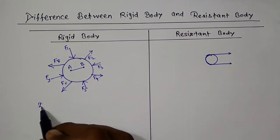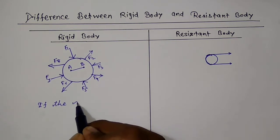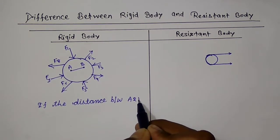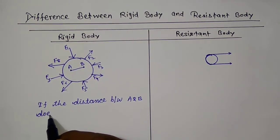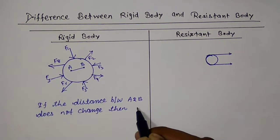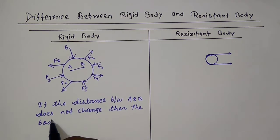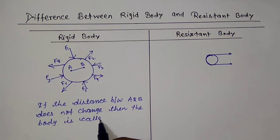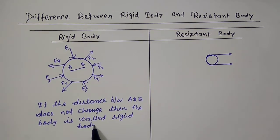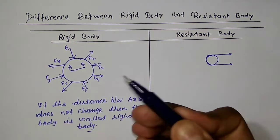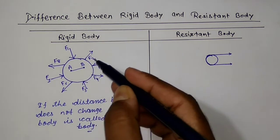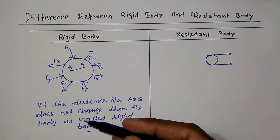If the distance between A and B does not change after applying the force on the body, then the body is called a rigid body. And if the distance between A and B is changed on applying the force, then it is not a rigid body. That is all about the rigid body.